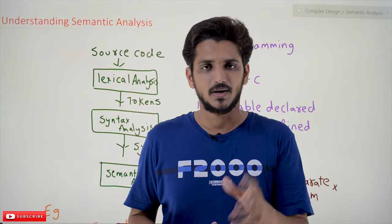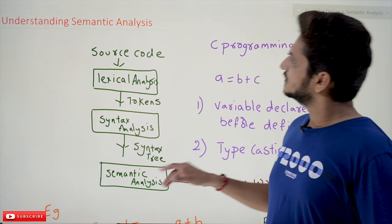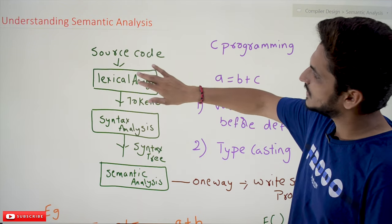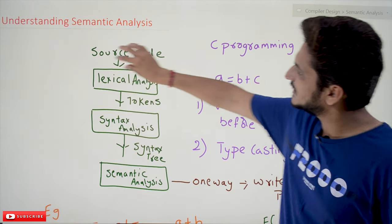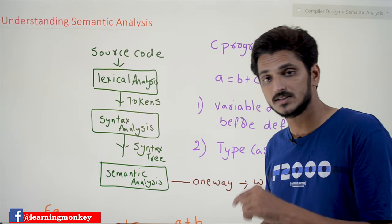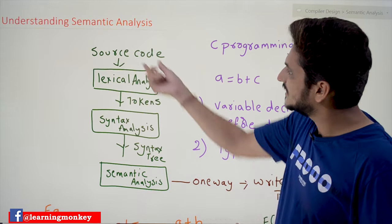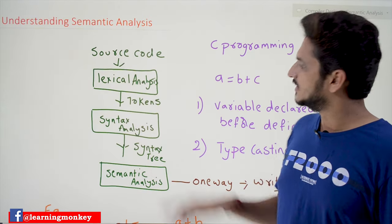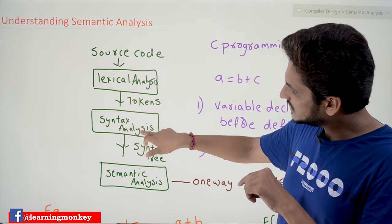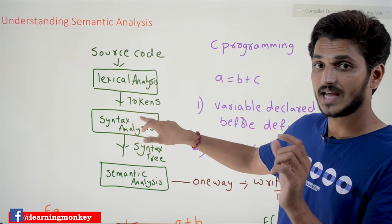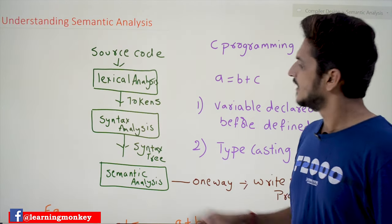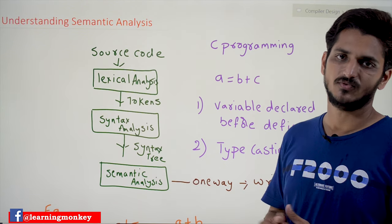For better understanding, let's try to understand what semantic analysis means. First we will refresh what we discussed previously. The source code is given as input to the lexical analysis phase, which converts it into tokens. These tokens are taken as input to the syntax analysis phase, which identifies whether the code is syntactically correct and produces a syntax tree. This syntax tree is then taken as input to the semantic analysis phase.